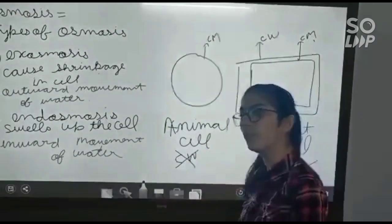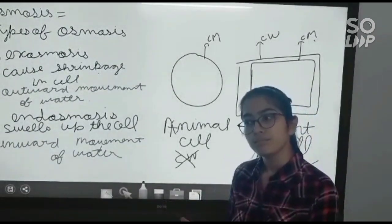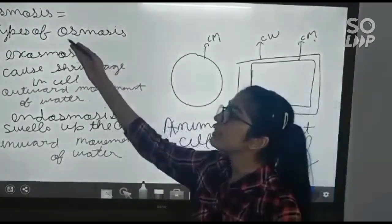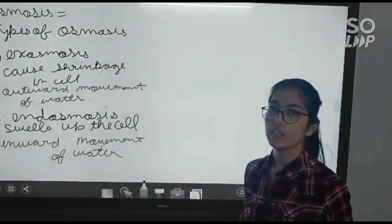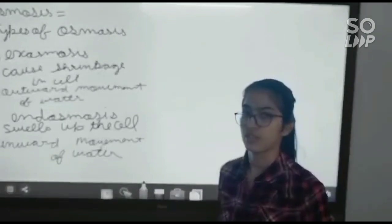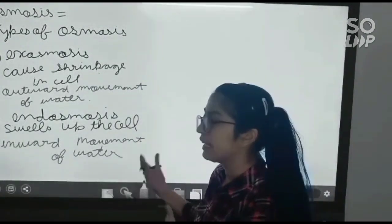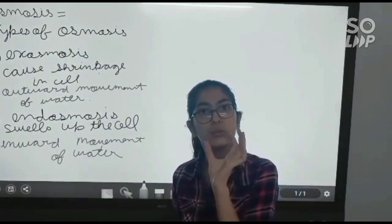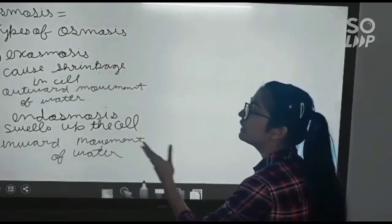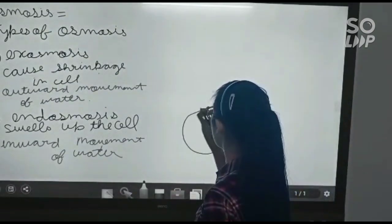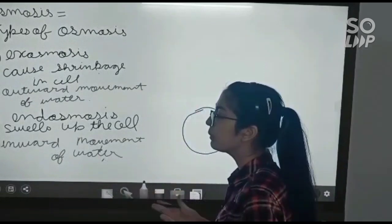So there are two kinds of osmosis: exosmosis and endosmosis. Let's take an example of a balloon. First we start with endosmosis. When we fill air into the balloon, it swells up. That is what happens with a cell — endosmosis is the inward movement of water, meaning water moves inside the cell.